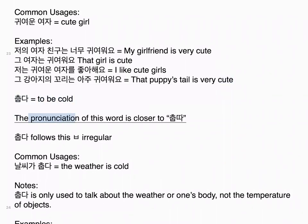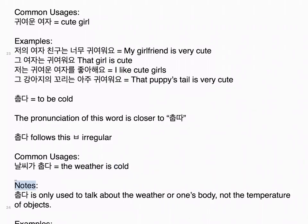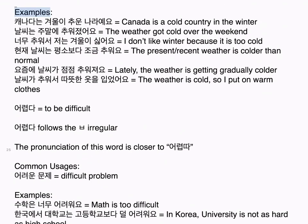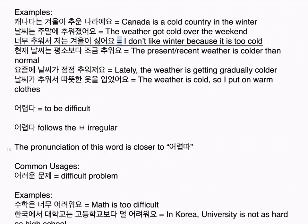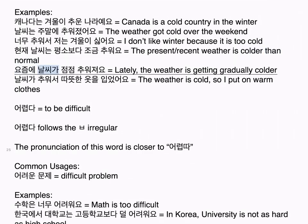춥다 means to be cold. The pronunciation is closer to 춥다. 춥다 follows the 비읍 irregular. Common usages: 날씨가 춥다 means the weather is cold. Notes: 춥다 is only used to talk about the weather or one's body, not the temperature of objects. Examples: 캐나다는 겨울이 추운 나라예요. Canada is a cold country in the winter. 날씨는 주말에 추워졌어요. The weather got cold over the weekend. 너무 추워서 저는 겨울이 싫어요. I don't like winter because it is too cold. 현재 날씨는 평소보다 조금 추워요. The present weather is colder than normal. 요즘에 날씨가 점점 추워져요. Lately the weather is getting gradually colder. 날씨가 추워서 따뜻한 옷을 입었어요. The weather is cold, so I put on warm clothes.